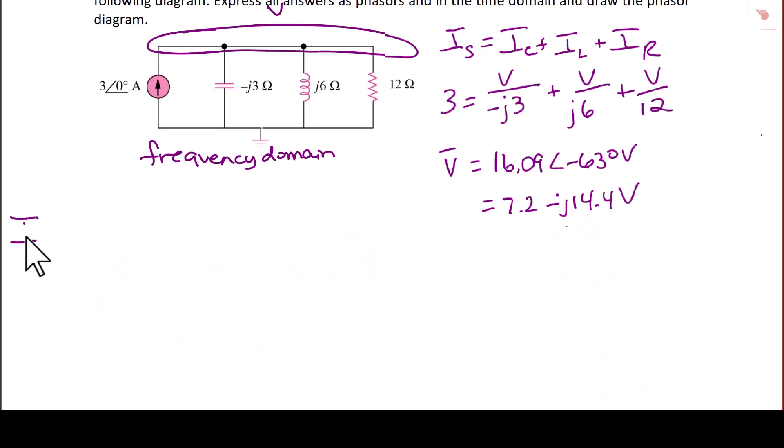So using that, we can now find the current through the capacitor as V over negative J3. V over negative J3 is equal to 5.366 with an angle of 26.57 degrees. Or in rectangular form, we get 4.8 plus J 2.4 amps.